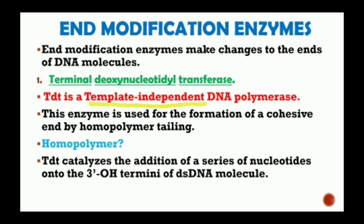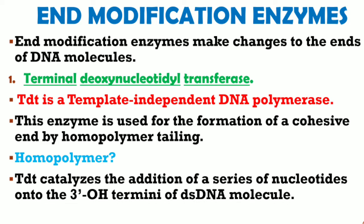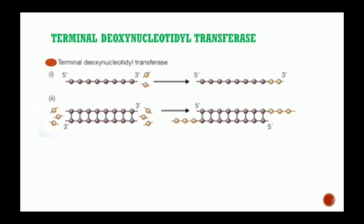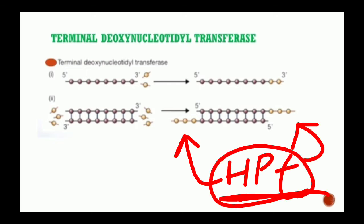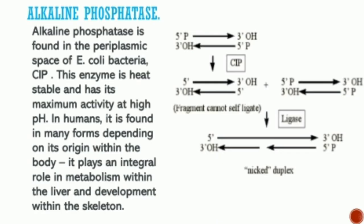The first enzyme used in end modification is terminal deoxynucleotidyl transferase. It is a template-independent DNA polymerase because it is able to synthesize a new DNA polynucleotide without base pairing of the incoming nucleotide to an existing strand of DNA or RNA. This enzyme is used for the formation of cohesive ends by homopolymer tailing. A homopolymer is simply a polymer in which all the subunits are the same. Terminal deoxynucleotidyl transferase catalyzes the addition of a series of nucleotides onto the 3' hydroxyl termini of a double-stranded DNA molecule. If this reaction is carried out in the presence of just one type of deoxynucleotide, a homopolymer tail is produced.